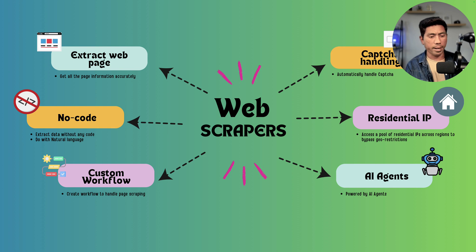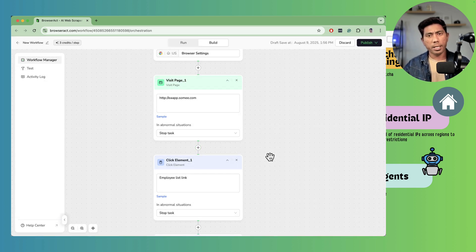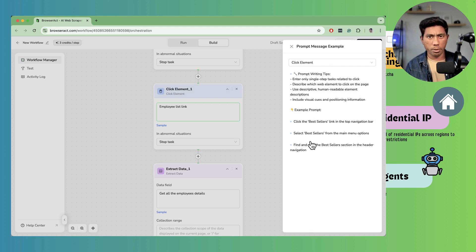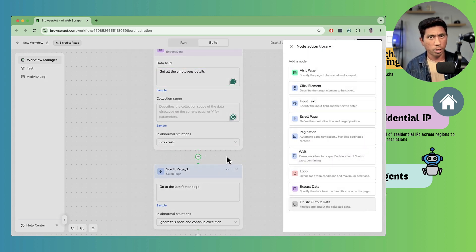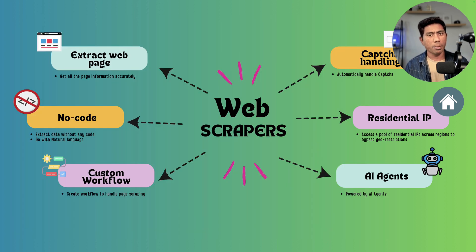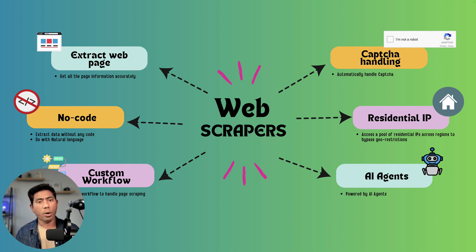You also need a custom workflow, so you can define conditions: if these features exist, go to this page; if not, follow a different workflow. You should have the ability to manage workflows without writing any code — that's another fundamental thing any web scraper should have with the power of AI. Additionally, automatic captcha handling is essential. Without it, you end up babysitting the scraper manually through captchas during web page extraction, and all those problems should be handled automatically.